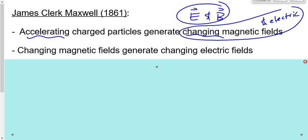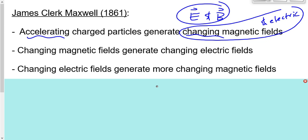Maxwell said that changing magnetic fields will, in turn, generate changing electric fields. And changing electric fields will, in turn, generate changing magnetic fields. So we've got this accelerating charged particle which generates electric and magnetic fields that are both changing. Then those fields generate more electric and magnetic fields, which generate more, and so on. So it has a way of propagating itself from the source — where the accelerating charge generated the EMR — to the place where you're observing the EMR.